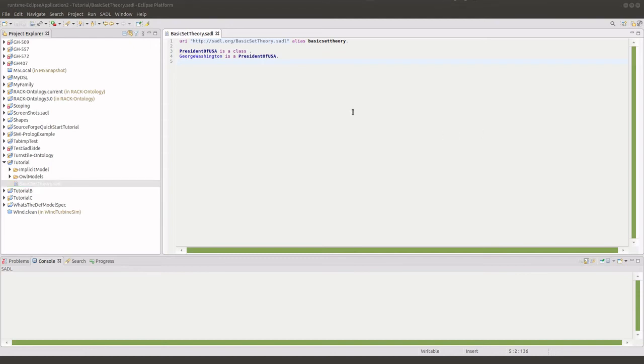In this exercise, we are going to begin by modifying our model to include a new class, military commander. So we declare the class just as we did President of USA. Now we are going to modify the definition of George Washington as an individual and state that he is a member of President of USA and military commander, meaning that he belongs to the intersection of those two classes.